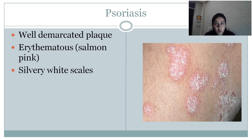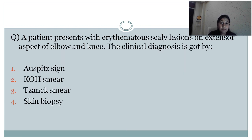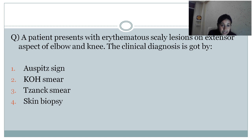Now coming to papulosquamous disorders. The most common is psoriasis. Look at this picture — there is a well-defined erythematous plaque with a salmon pink appearance and white thick silvery scales. This is a classical lesion: erythematous plaque with superficial silvery white thick scales. This is an example of psoriasis. Question: a patient presents with erythematous scaly lesions on the extensor aspect of elbow and knee — the clinical diagnosis is psoriasis.